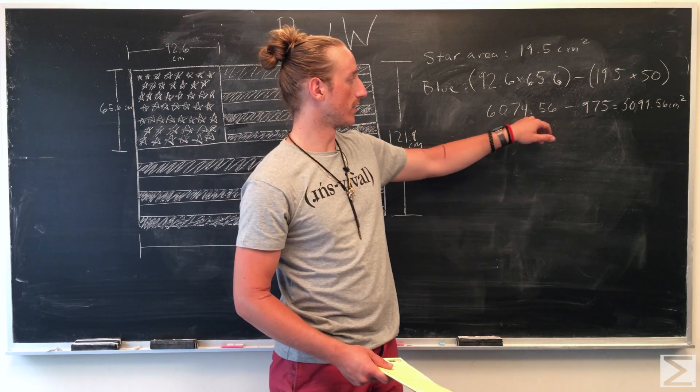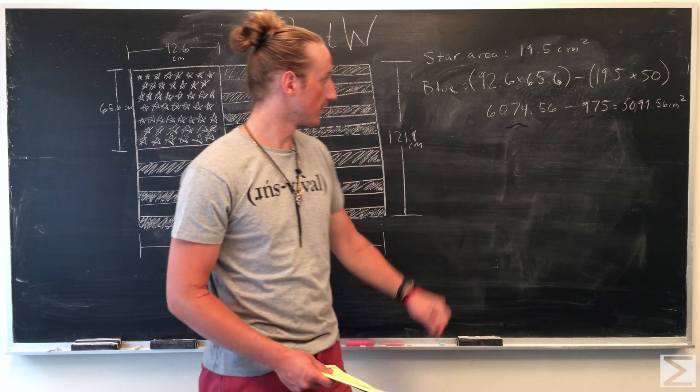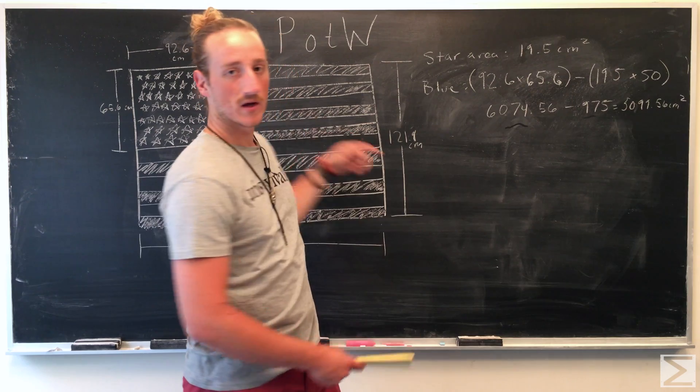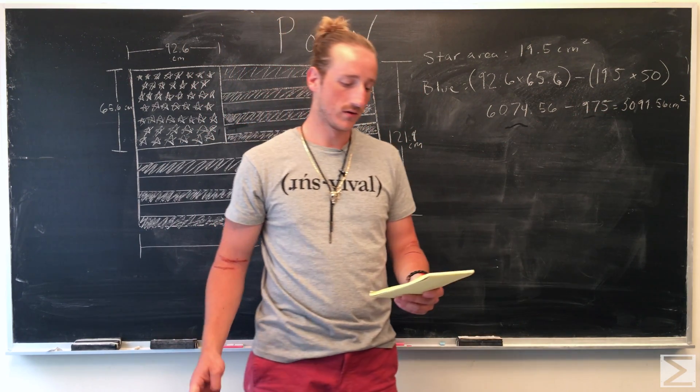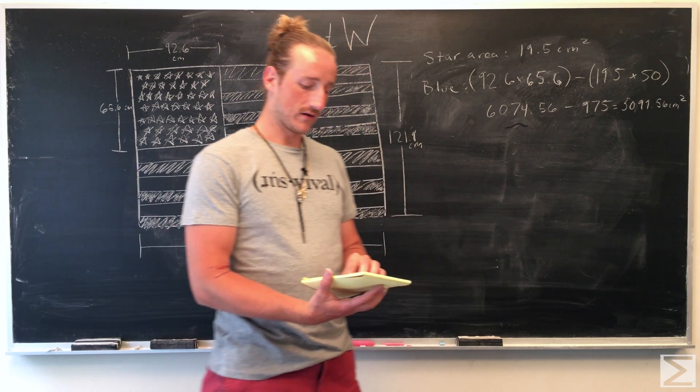The total area minus the white stars gives us that the blue area, everything behind the stars, is going to be 5099.56 centimeters squared. And that's the answer to Part A.